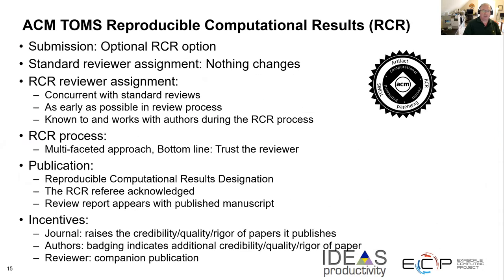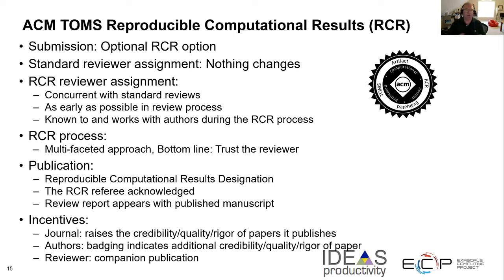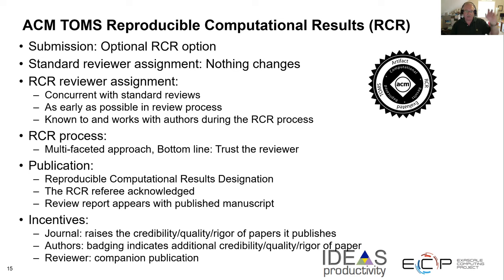Regarding publications, the Association for Computing Machinery publishes a number of journals. One is called Transactions on Mathematical Software, or TOMS. They have a reproducibility initiative for computational results. This involves an extra reviewer — you have the typical review for scientific merit and quality, and then there's an additional reviewer assigned specifically to reproduce the work. They actually write up an adjunct about the reproduction of the work and get a sort of publication out of it.